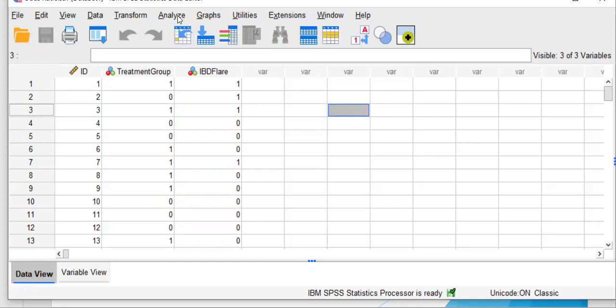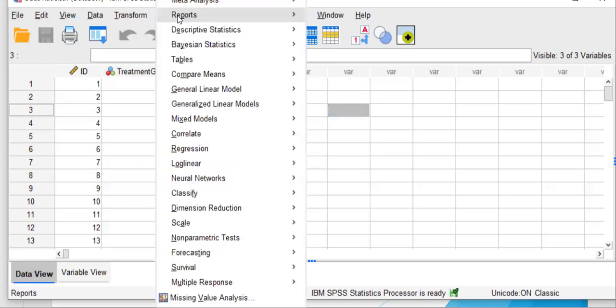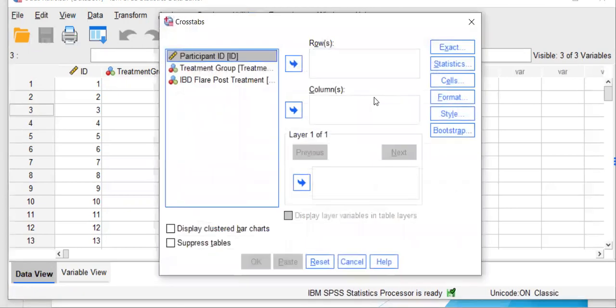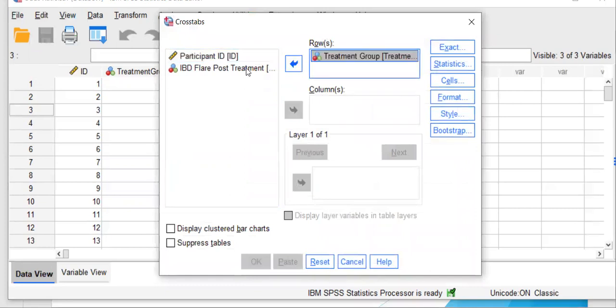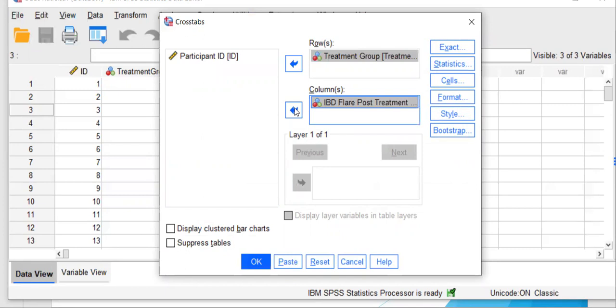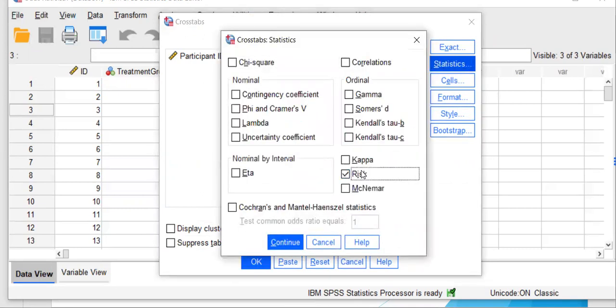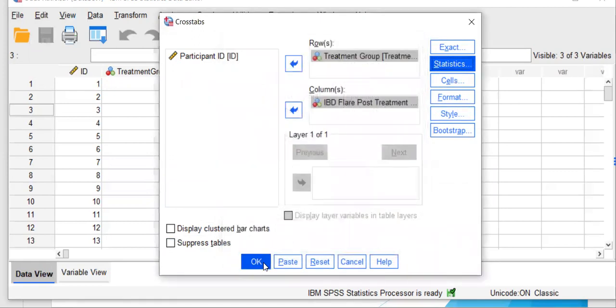So to compute the odds ratio, we'll go to Analyze, Descriptive Statistics, and Crosstabs. You'll move over one study variable in the row and one in the column. It doesn't matter which one is which, you'll get the same value either way. Then click on Statistics and Risk, click Continue and OK.